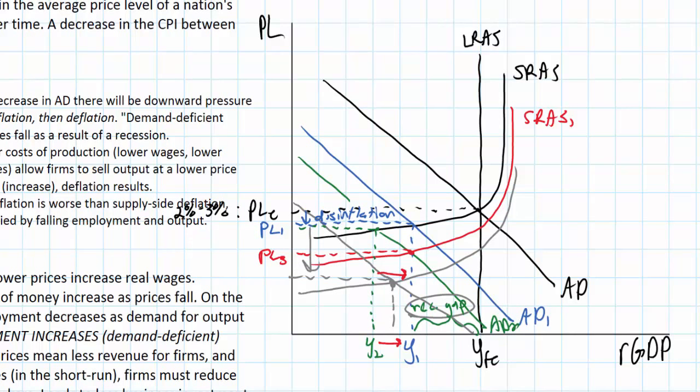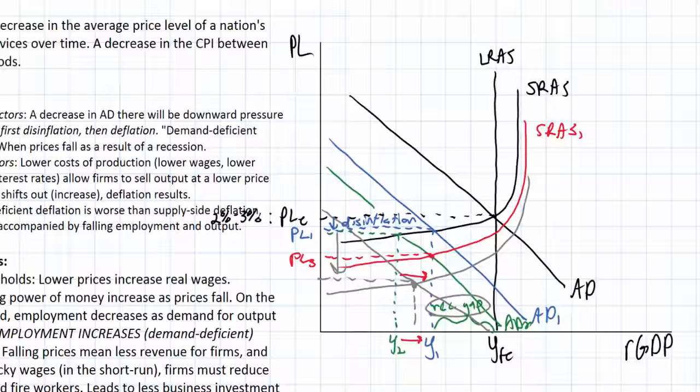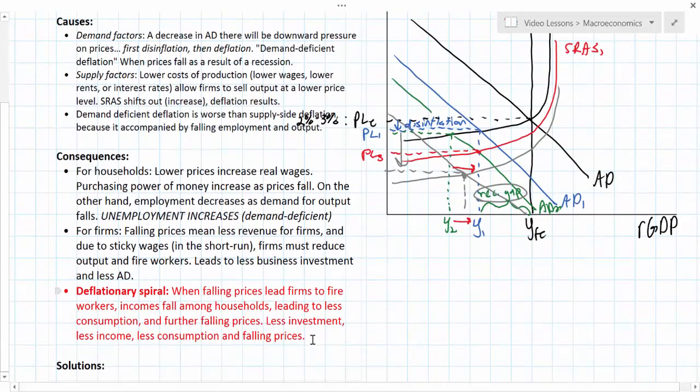This downward pressure on prices and wages without a full self-correction could result in a country getting stuck in a recessionary deflationary gap where output remains below full employment. And due to the persistence of expected deflation, households and firms will continually cut back on consumption and investment, preventing the economy from ever self-correcting. The deflationary spiral is possibly one of the greatest macroeconomic challenges a country could face.